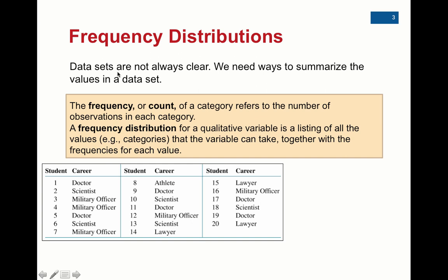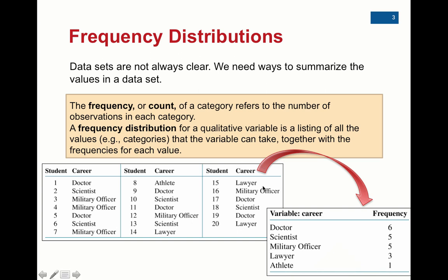So we might want to come up with what's called a frequency distribution. We take this information and put it into a table where we list the categories. The variable would be what your career is, and then the observations we got were doctor, scientist, military officer, lawyer, and athlete. What we did was show the frequency or count for each variable. Instead of listing it as before, it's much more organized in this frequency table, and you get all the same information.